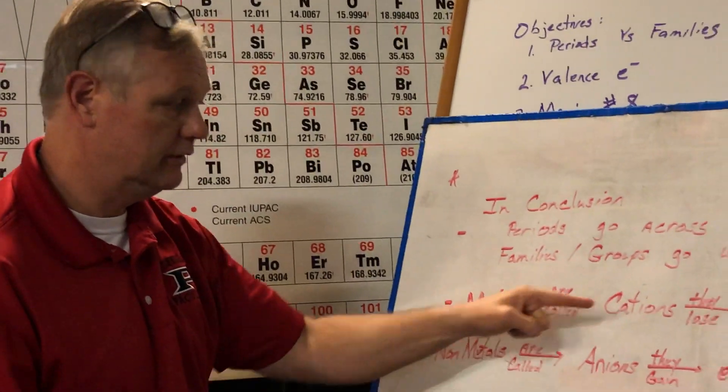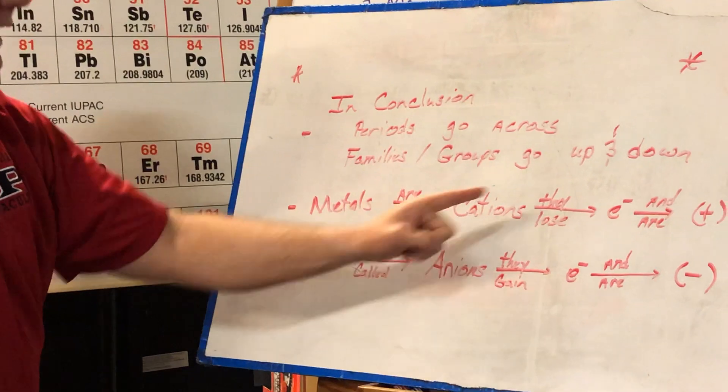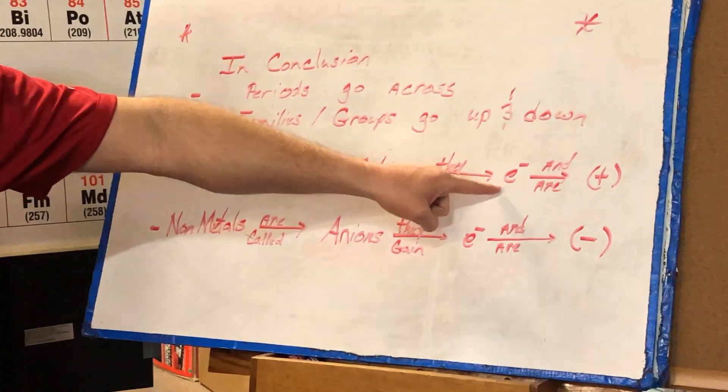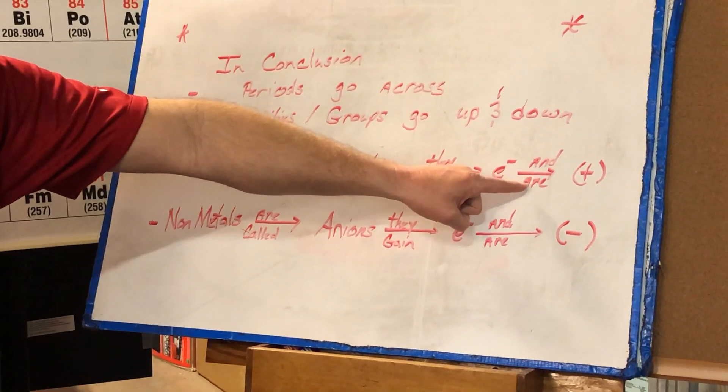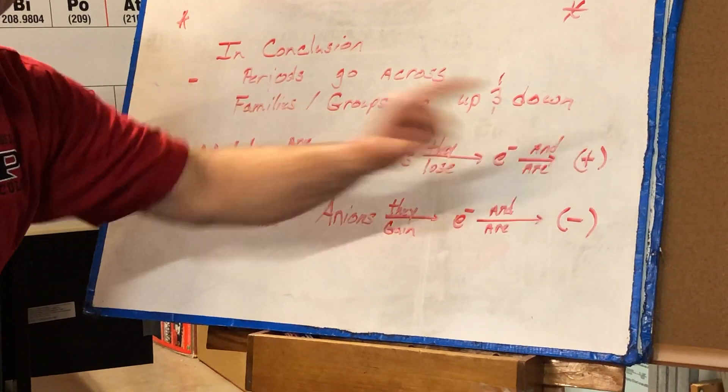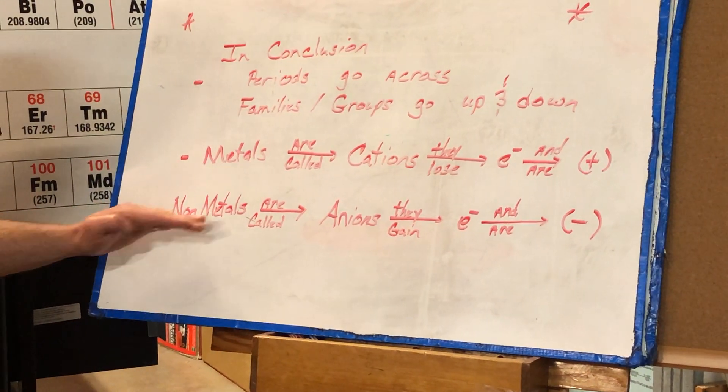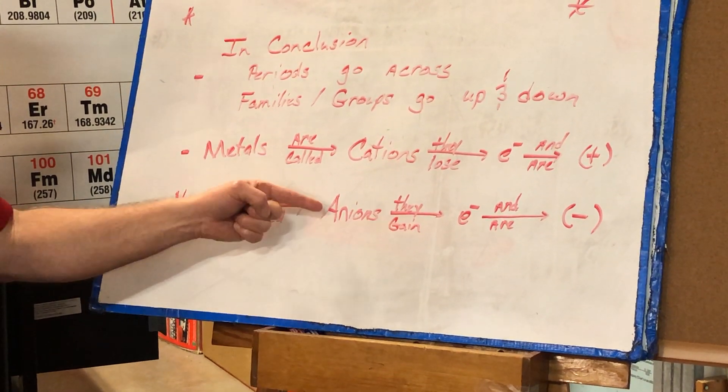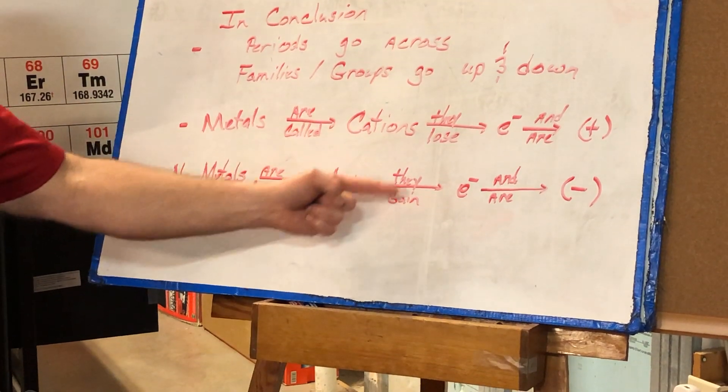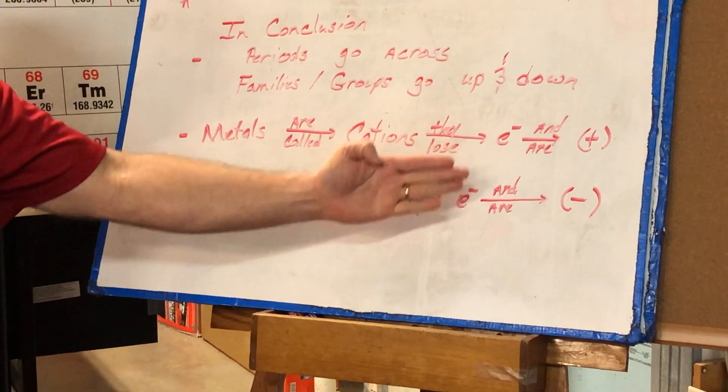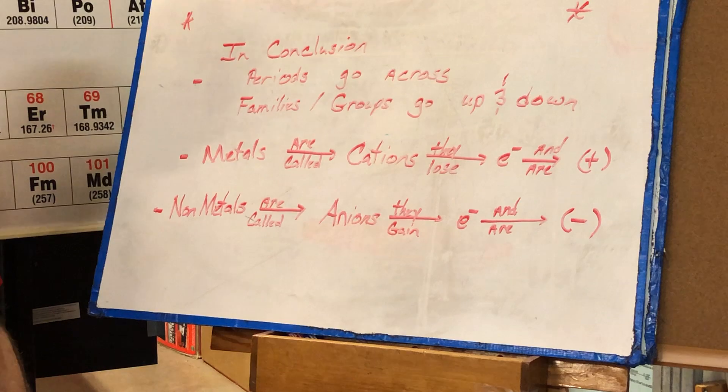Metals are called cations. They lose electrons, therefore they will always carry a positive charge. Non-metals are called anions. They gain electrons, therefore they're always going to have a negative charge.